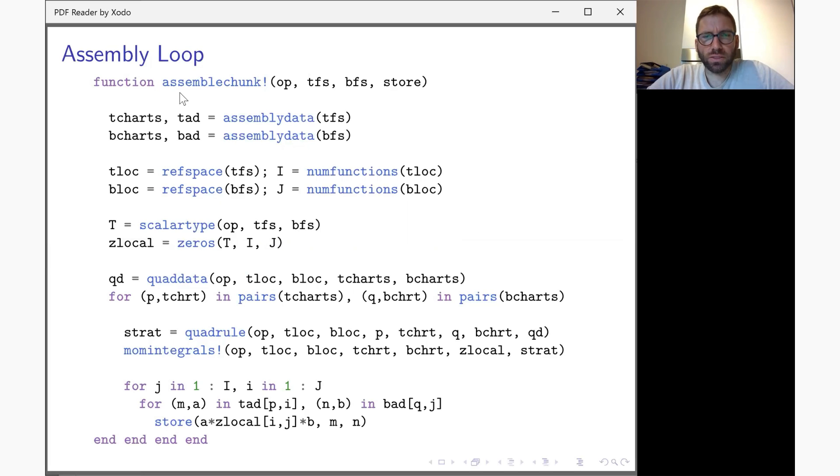In finite elements and boundary elements, a basis function has contributions from a small number of often adjacent geometric entities. The assembly data gives you, in a sense, the transposed information: given a geometric entity, it tells you which basis functions are relevant to that geometric element. Quadrature data is computed before the double for loop because it will be used over and over again, so it makes sense to compute it here before.